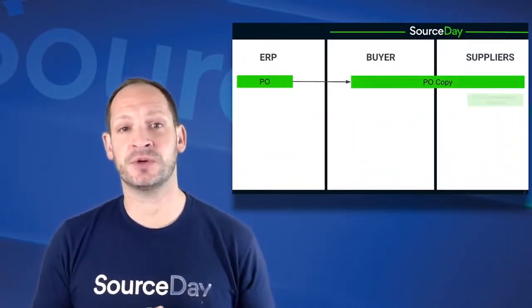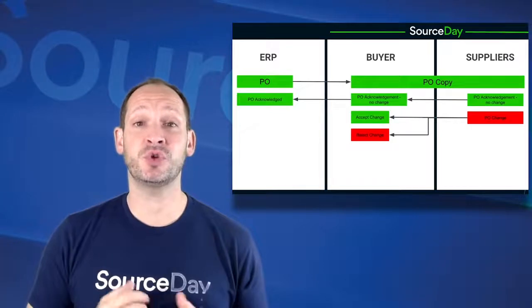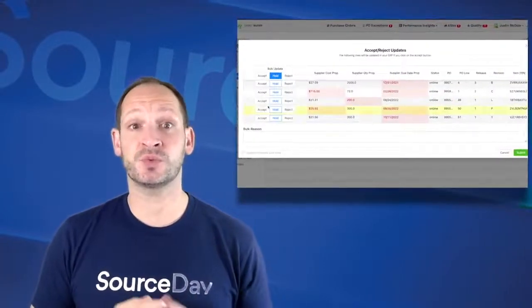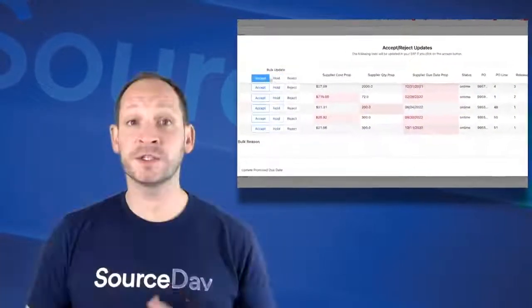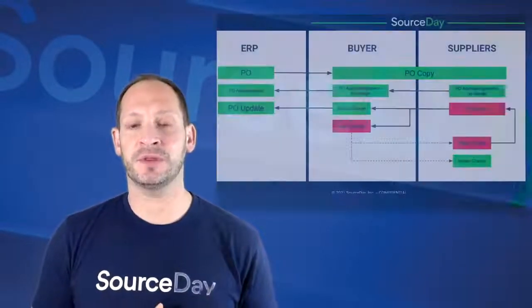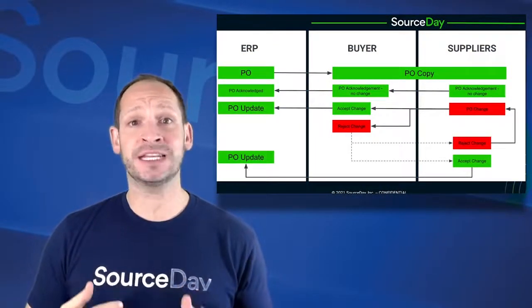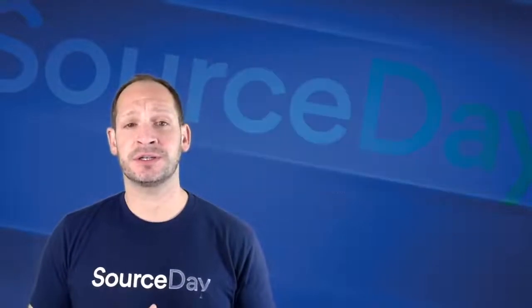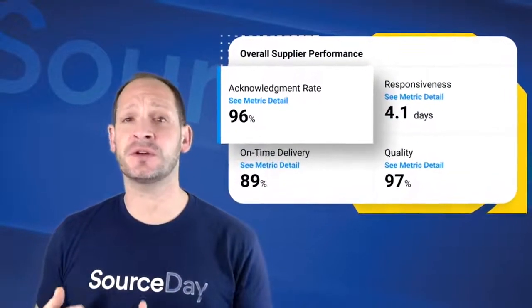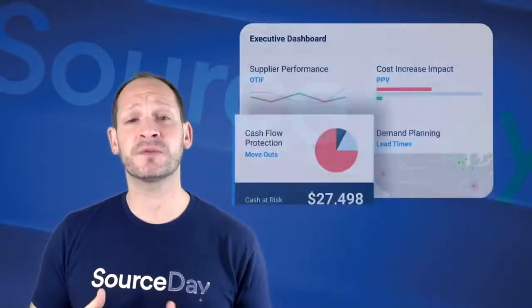During this overview, you saw how SourceDay is solving one of the biggest challenges you have with your suppliers — efficient collaboration. I covered better communication with timely acknowledgements from your suppliers and a simple way to review PO changes that they propose, which we know happens about 52% of the time. Once those changes are accepted, it's important that those PO lines are automatically updated in ERP. This avoids the downstream ripple effect of inaccurate ERP data, which impacts production and customer orders. Lastly, managing performance through scorecards and executive insights provides a modern, proactive, and truly collaborative portal for your organization.